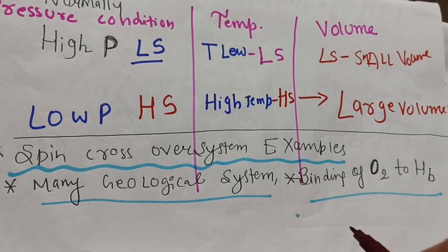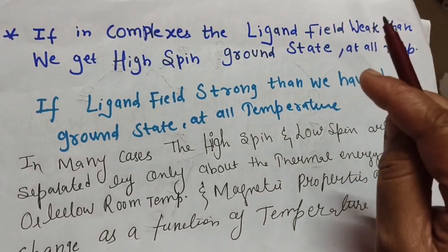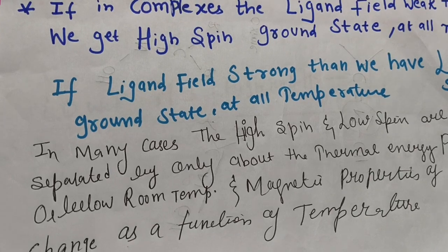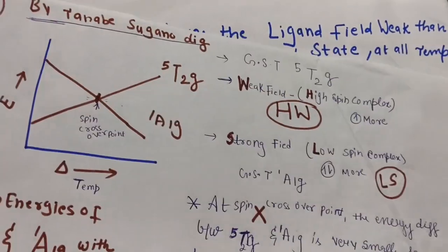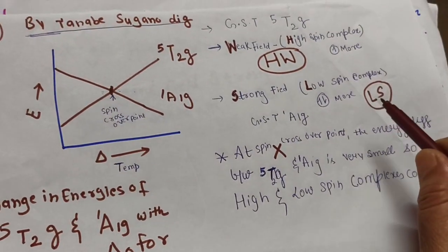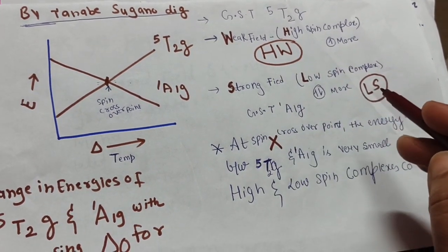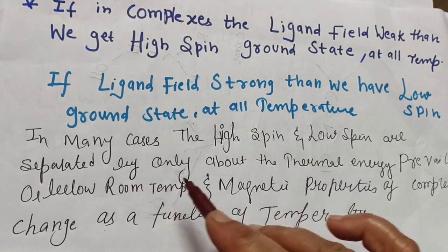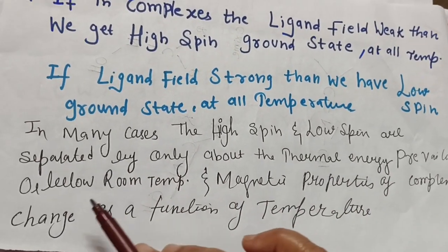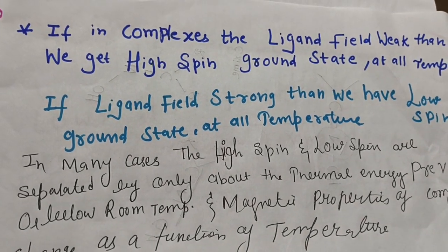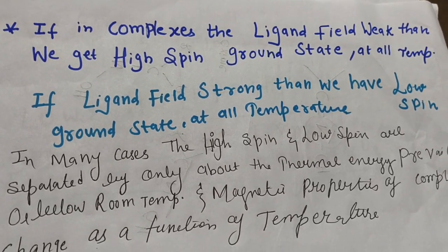Spin crossover has applications in geological systems and in the binding of oxygen to hemoglobin. In conclusion: weak ligand fields give high spin ground states at all temperatures; strong ligand fields give low spin complexes. High spin and low spin states are often separated only by thermal energy near room temperature, so magnetic properties change as a function of temperature.